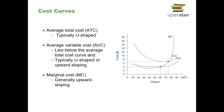We're going to talk next week about the shutdown point. Just to give you a tip: the shutdown point is when price is below average variable cost. When your price is below average variable cost, you can't even pay the bills — you can't pay your workers to show up that day — so the firm shuts down.